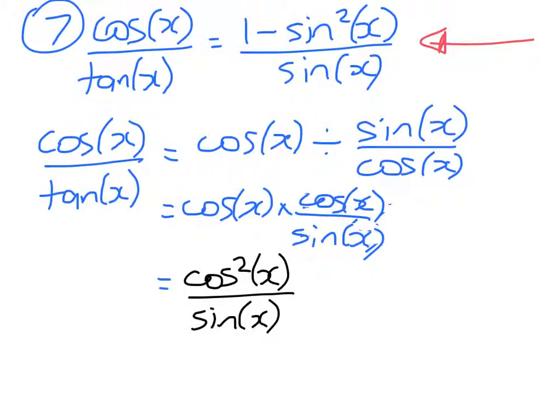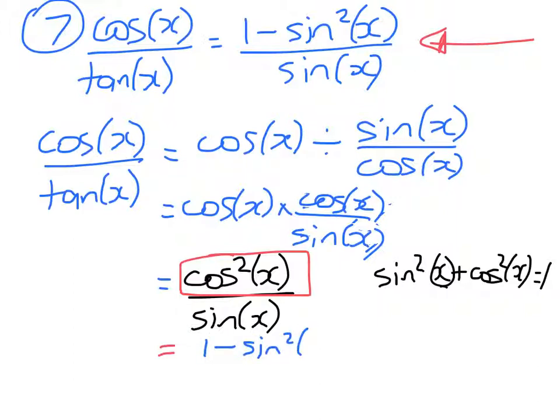Right, but I know from this identity, sin squared(x) plus cos squared(x) equals 1, that I can rewrite this. So this is equal to 1 minus sin squared(x) over sin(x) as required.